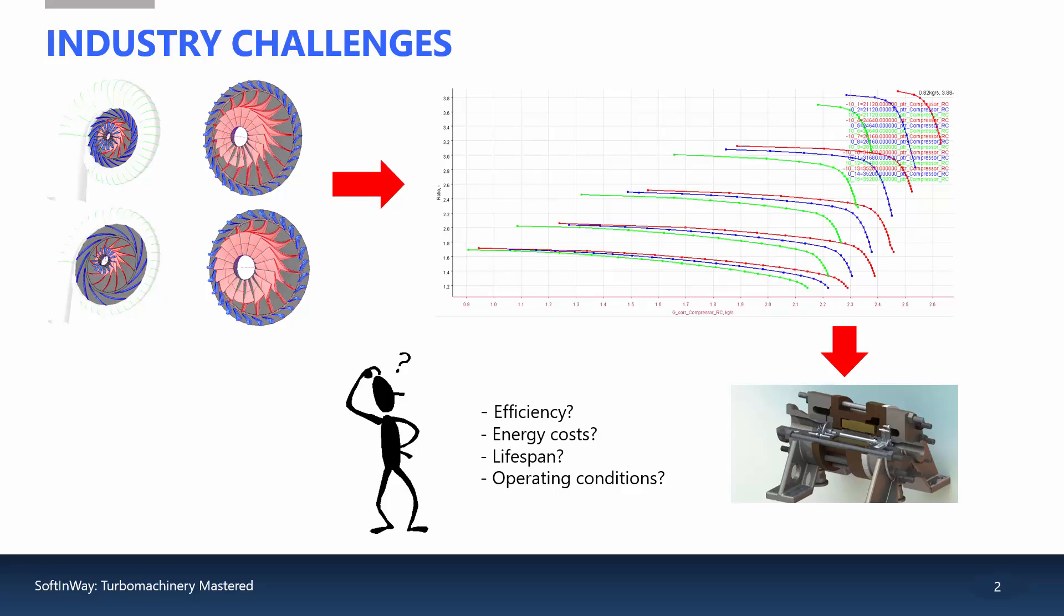Having digital thread capabilities ensures accurate cycle predictions by calculating the real condition performances of the components. Let's take a look.